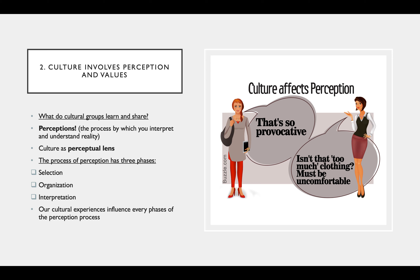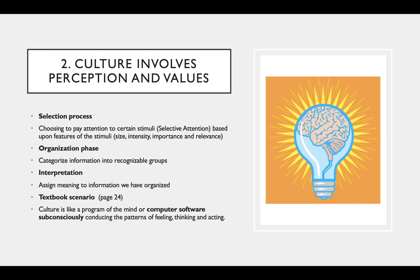Culture involves perception. From communication science 1A, culture is processed in the mind and internalized to interpret what we're trying to understand. Culture acts as a perceptual lens — we process the software of our culture by selecting information, organizing it into groups, and interpreting what we've organized. This is the process of perception, which has three phases. The selection process means we choose what we pay attention to based on features of the stimuli — its size, intensity, and importance to us.